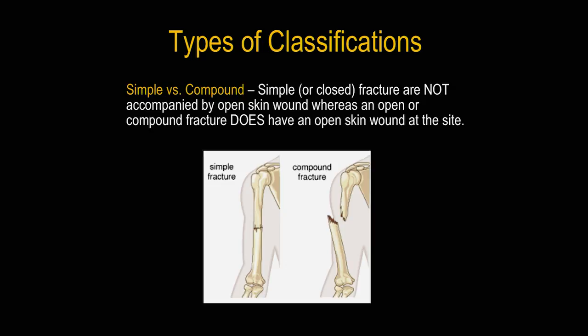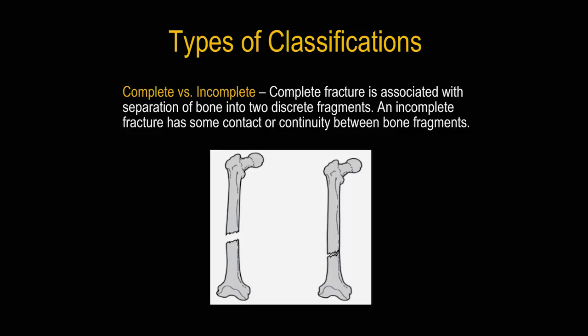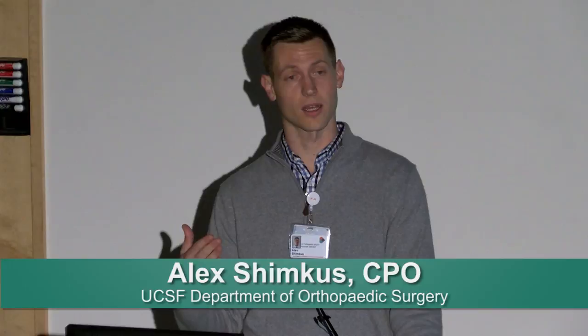Complete versus incomplete is another distinction that greatly matters when considering what type of brace is appropriate. A complete fracture means separation of bone into two discrete fragments — even if they are millimeters apart, we have two completely mobile segments independent of each other. An incomplete fracture has some contact or continuity between bone fragments, ranging from a tiny chip to barely hanging on, but still one complete segment that we don't need to worry about moving independently.